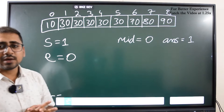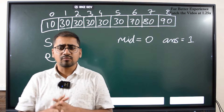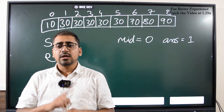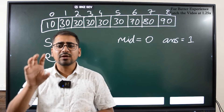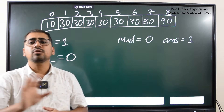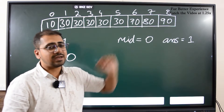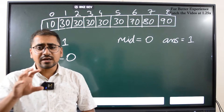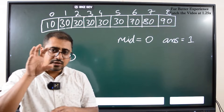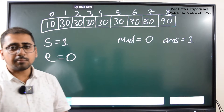This is how we apply binary search for first occurrence. In regular binary search, when the value is found we return the mid index directly. But here, instead of returning, we store the mid index in the answer variable and continue searching on the left side. This is because we can't guarantee that the mid index is the first occurrence — there might be an earlier one. We store the index and keep moving left.